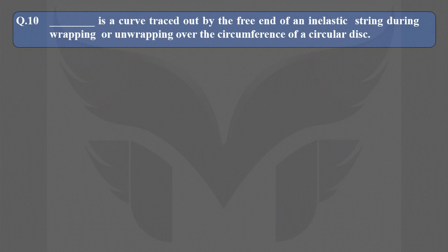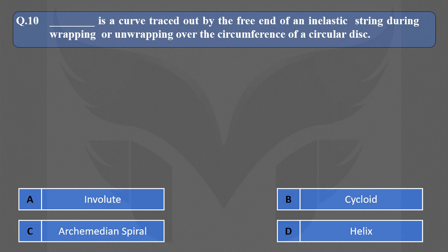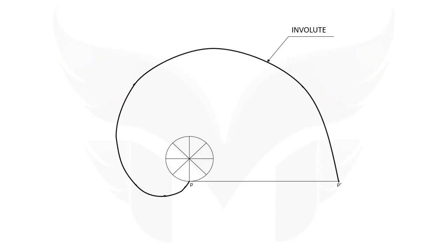Next question: Dash-dash is a curve traced out by the free end of an inelastic string during wrapping or unwrapping over the circumference of a circular disk. Options are involute, cycloid, Archimedean spiral, and helix. The answer is involute. Here we have an inelastic string PP' in unwound condition. End P is attached to the circumference of a circle while end P' is free. When we wind this string around the circumference of a circular disk, the curve traced out by the free end P' is an involute.